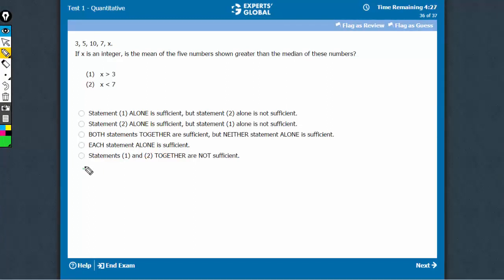Let's arrange these in the ascending order: 3, 5, 7, 10. x can come anywhere.